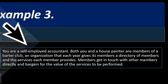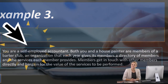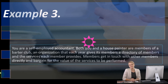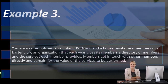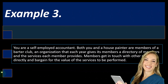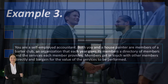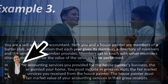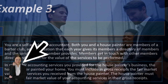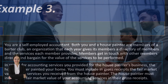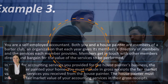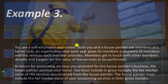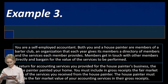Example three: you are a self-employed accountant. Both you and a house painter are members of a barter club — an organization that gives its members a directory listing members and the services each provides. Members contact each other and bargain for the value of services. In return for accounting services you provided for the house painter's business, the house painter painted your home. You must include in gross receipts the fair market value of the services you receive from the house painter, and the house painter must include the fair market value of your accounting services in their gross receipts.